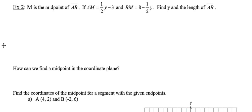Let's go take a look at another one. This one says M is the midpoint of line segment AB. If the distance between points A and M is one-half Y minus 3, and the distance between points B and M is 8 minus one-half Y, they want us to find both Y and the length of line segment AB. Just like the first problem, any time I'm given a problem without a picture, the first thing I'm going to do is draw a diagram. Line segment AB has endpoint A and endpoint B, with midpoint M, and the midpoint splits the segment into two equal parts.